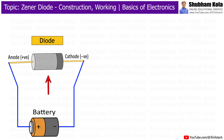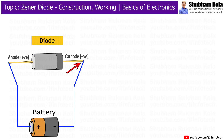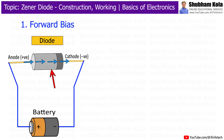When a diode is connected such that the positive terminal of the battery is connected to the anode and the negative terminal to the cathode, it is said to be forward biased. In this condition, the current flows through the diode.